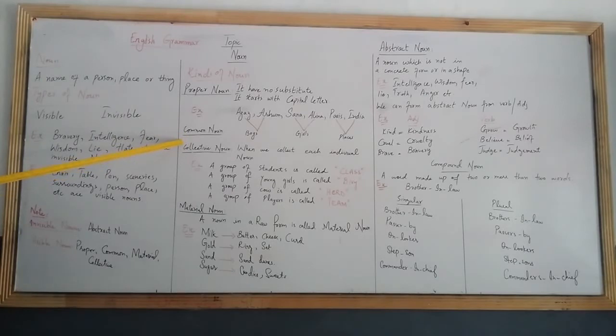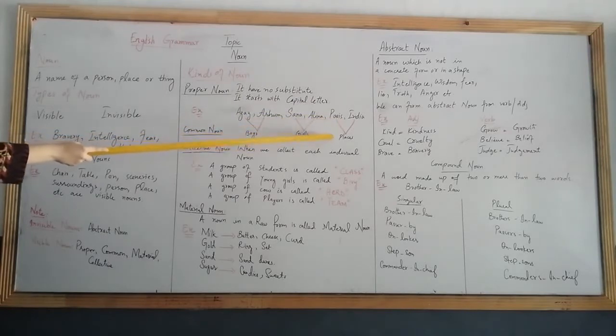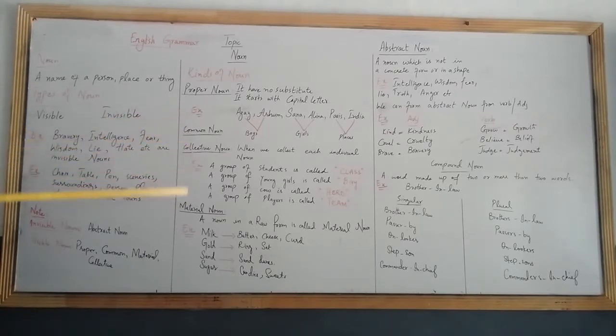Second is common noun. Common noun is a general name. Like Hazaz and Arham, what is common is that they are boys. Sanaa and Alina, what is common is that they are girls. Paris and India, what is common is that they are places.